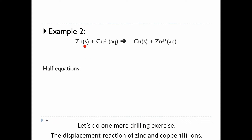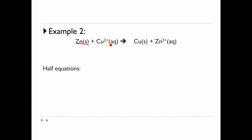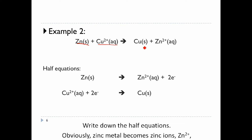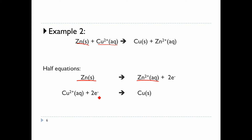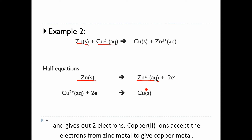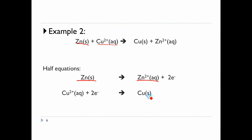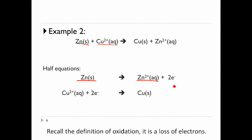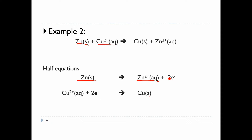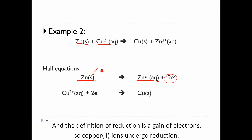Let's do one more drilling exercise: the displacement reaction of zinc and copper two ions. Write down the half equations. Zinc metal becomes zinc ions, Zn2+, and gives out two electrons. Copper two ions accept the electrons from zinc metal to give copper metal. Recall the definition of oxidation — it is a loss of electrons — so zinc metal undergoes oxidation. The definition of reduction is a gain of electrons, so copper two ions undergo reduction.